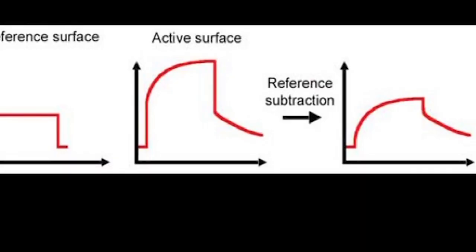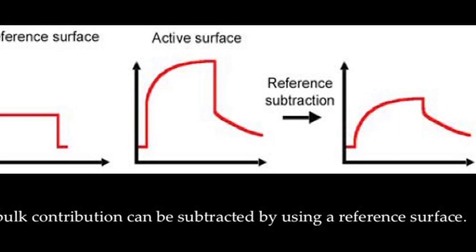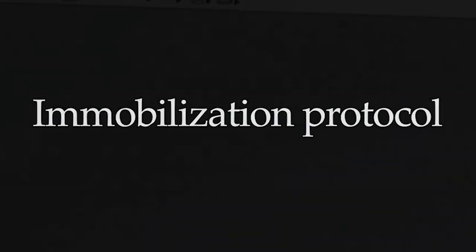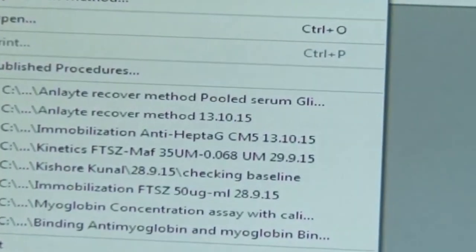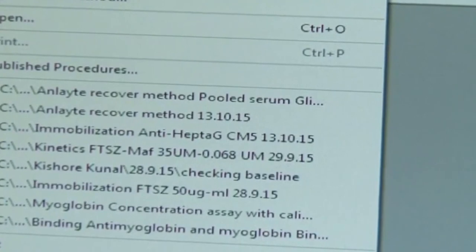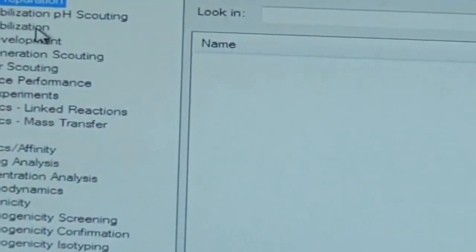Reference subtraction is particularly important for assays where measurement is taken during the sample injection. The bulk contribution due to any difference in the sample matrix and running buffer can be subtracted by using a reference surface. This reference surface is typically placed upstream of the active surface. The flow cells on the chip surface are optimized accordingly for use in pairs that is flow cell 1 with flow cell 2 and flow cell 3 with flow cell 4.